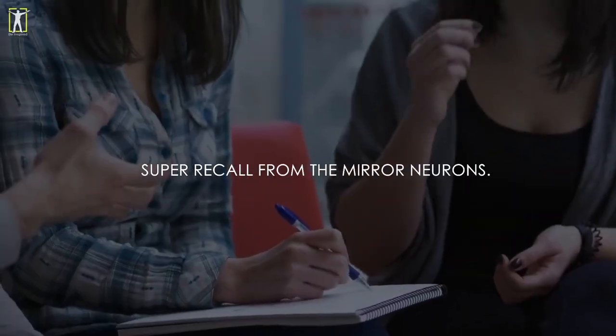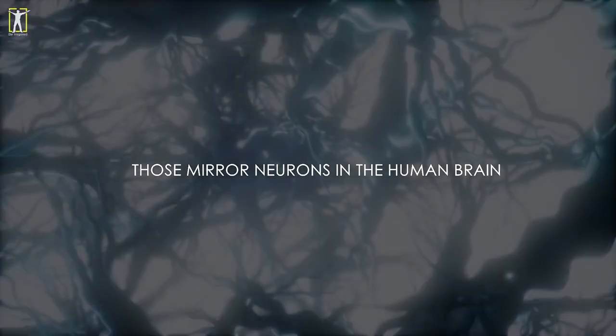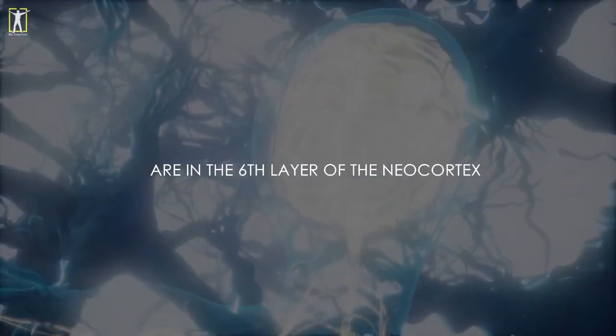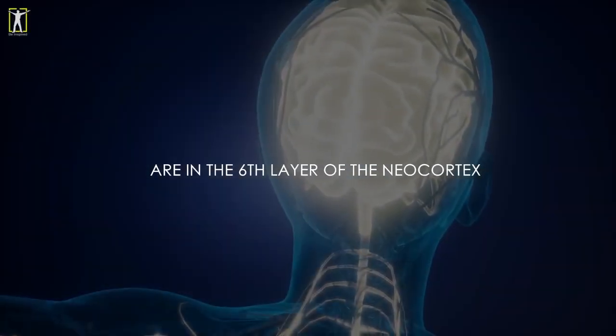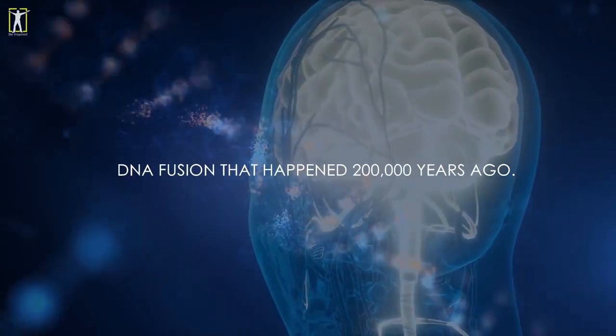And here's the kicker: those mirror neurons in the human brain are in the sixth layer of the neural cortex that is made possible through a mysterious DNA fusion.